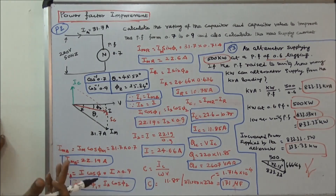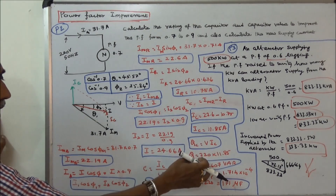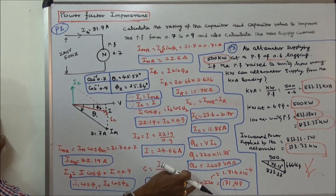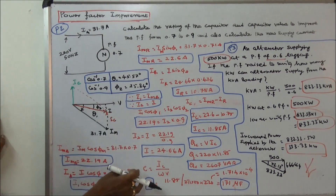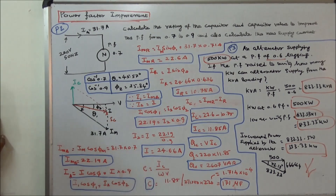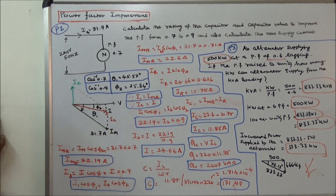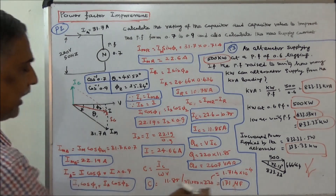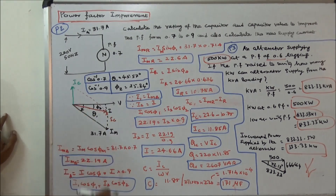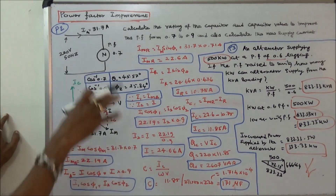Now we can calculate the capacity of the capacitor: Qc = V × Ic = 220 × 11.85 = 2607 VAR (approximately 26.7 kVAR as rated). The capacitance value: C = Ic / (ω × V) = 11.85 / (2π × 50 × 220) = 171 microfarads. Summary: capacitor rating is 2607 VAR, capacitance is 171 μF, new supply current is 24.66 amps, and capacitor current is 11.85 amps.